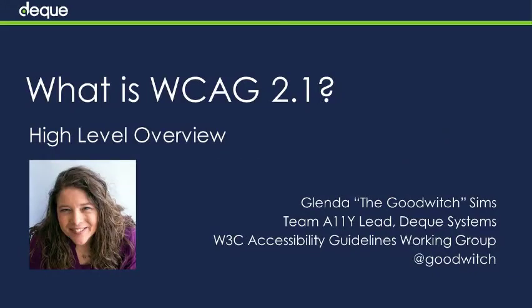You may be wondering, what is all this talk about WCAG 2.1? And what in the world is WCAG? The Web Content Accessibility Guidelines, also known as WCAG, has been around since May 5th of 1999. Version 1.0 was published on that date. That first version of the Accessibility Guidelines was very focused on HTML, and it was a wonderful step forward in making the web and digital technology accessible.